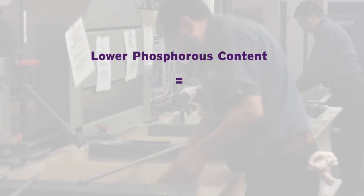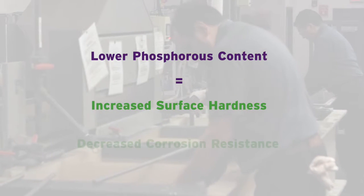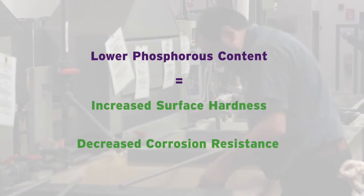As phosphorus content decreases, the finish becomes harder, but loses some of its corrosion resistance properties.